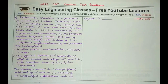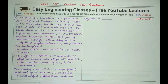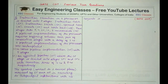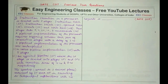The next question says that instruction execution in a processor is divided into five stages: instruction fetch, instruction decode, operand fetch, execute, and write back. These stages take 5, 4, 20, 10, and 3 nanoseconds respectively. A pipelined implementation requires buffering between each pair of consecutive stages with a delay of 2 nanoseconds.